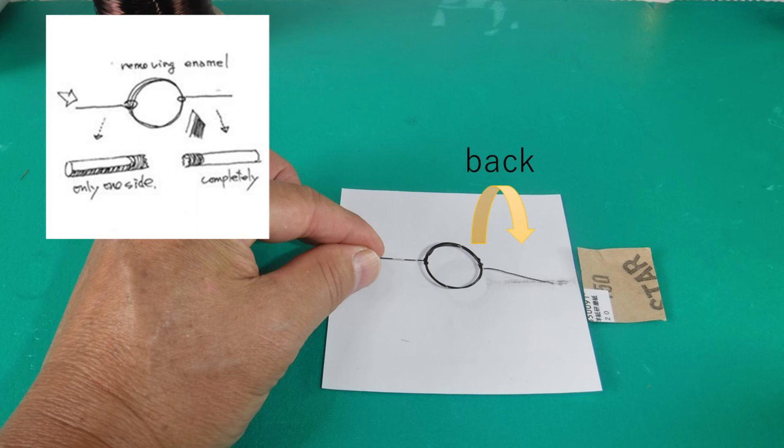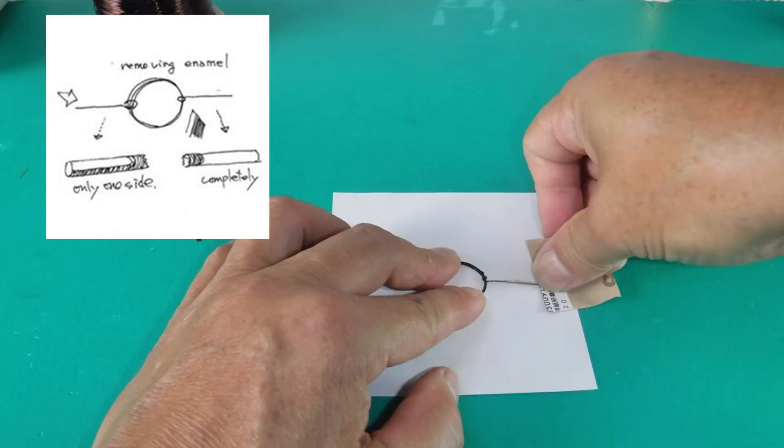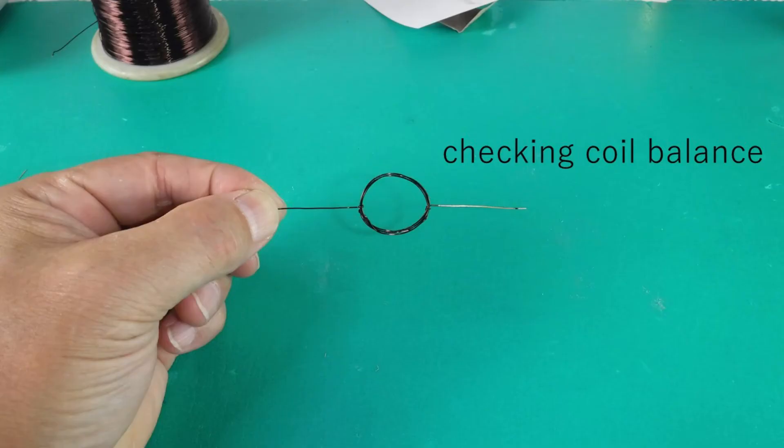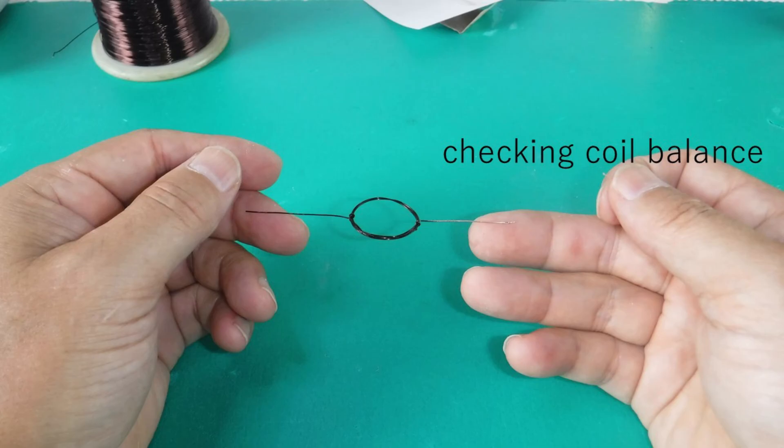Wrap one side all over, but the other only one side. This will be the function of a motor brush. It is very important to make a balanced coil.